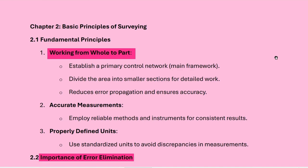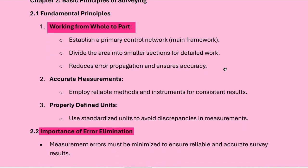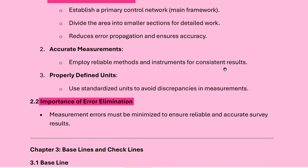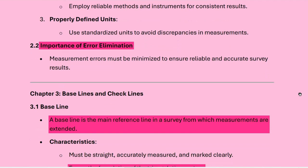The most common benefit of working from the whole to part is that accumulation of error is reduced. The second benefit is accurate measurement — it implies reliable infrastructure for consistent results. The third is properly defined units, using standardized units to avoid discrepancies in measurement. Measurement errors must be minimized to ensure reliable and accurate survey results.